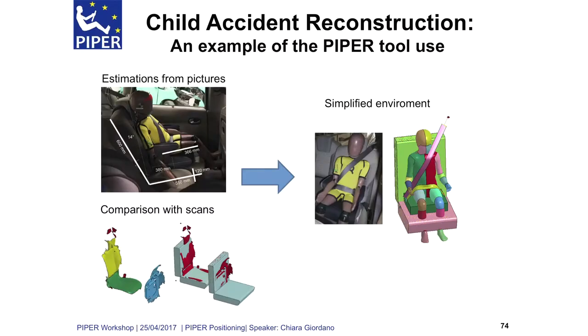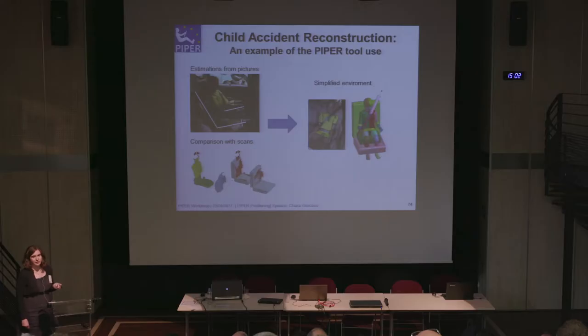Here is what we have for the reproduction of the car environment. We had estimations of measures from pictures with different angles, and we also had scans from the cars. From comparison with scans and estimations from pictures, we could produce the simplified environment. As you can see, if I seat the child in the generalized environment, it is out of position — the legs are penetrating the seat — so we need to position the child.